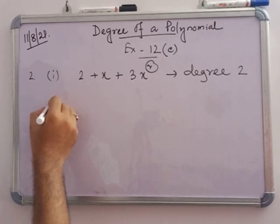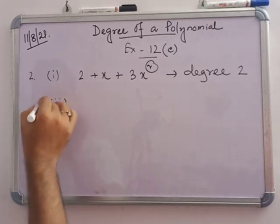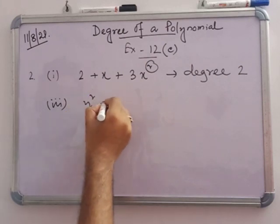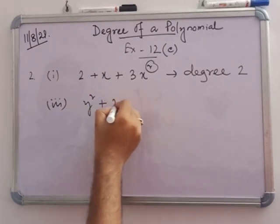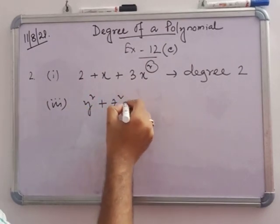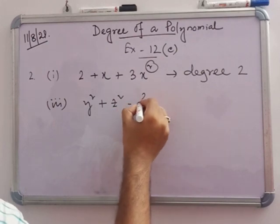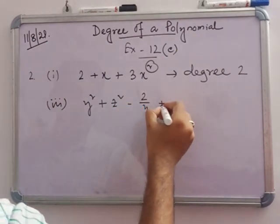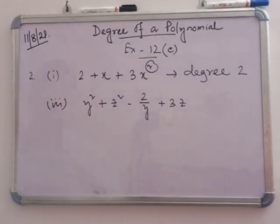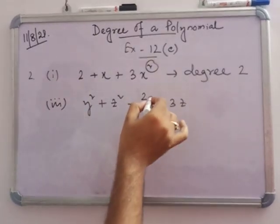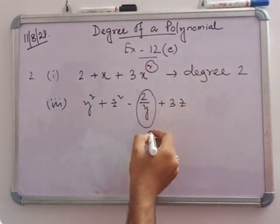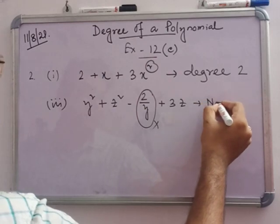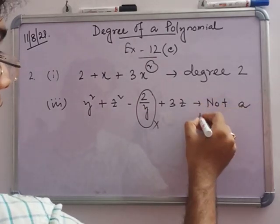In number 3: y squared plus z squared minus 2/y plus 3z. Since the term 2/y is present, this is not a polynomial.